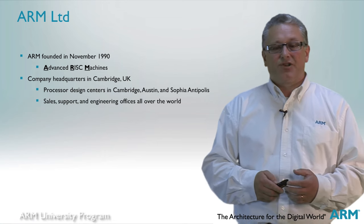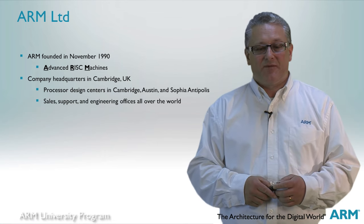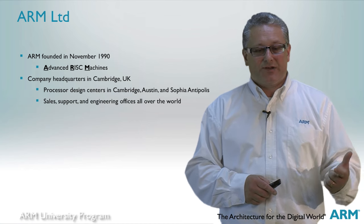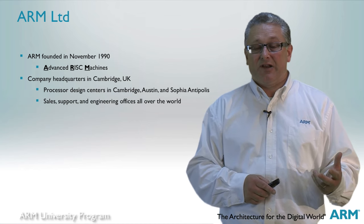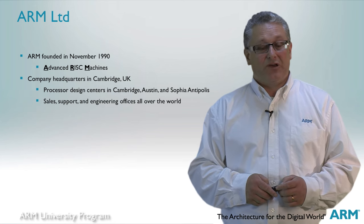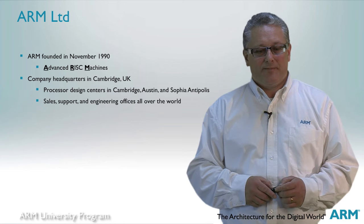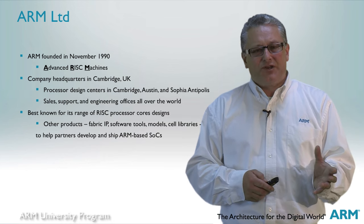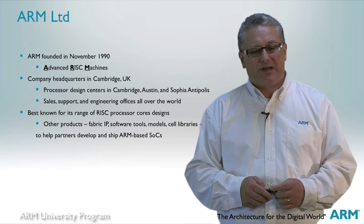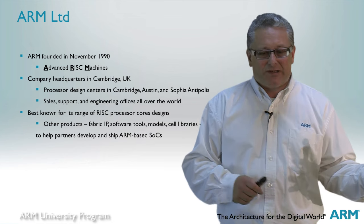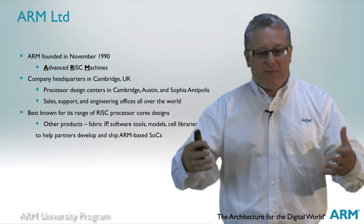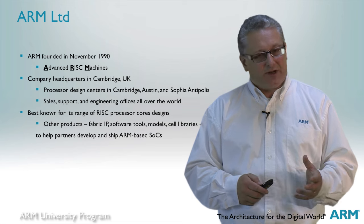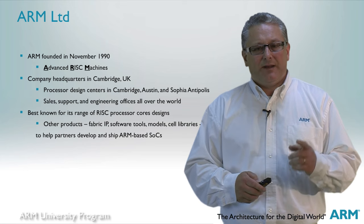Engineering development is concentrated at our headquarters office in Cambridge, England, with design centres in Sophia Antipolis in the south of France, Austin Texas, San Jose California, as well as Trondheim Norway and Bangalore in India. ARM is best known for its range of RISC processor cores, but also produces a large range of supporting technology both for chip designers and software developers. That includes fabric and physical IP, software models and development tools, graphics cores and peripherals.